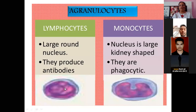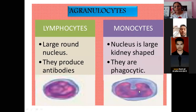Lymphocytes are agranulocytes with a large, round nucleus. They produce antibodies. Monocytes also belong to the agranulocytes and have a large, kidney-shaped nucleus. Monocytes are phagocytic in nature.